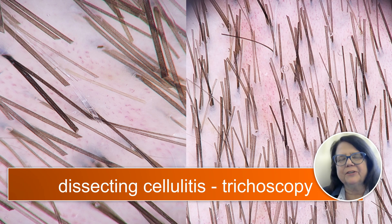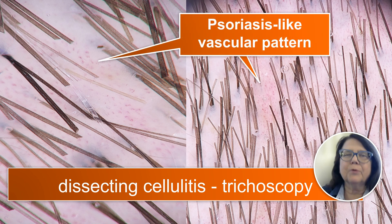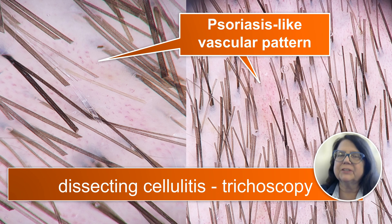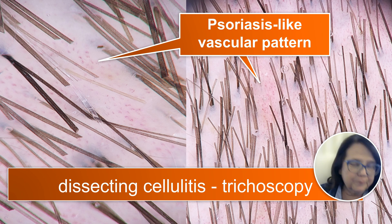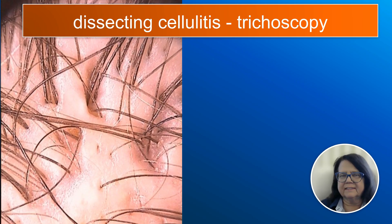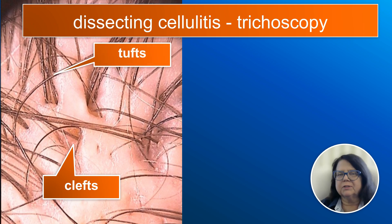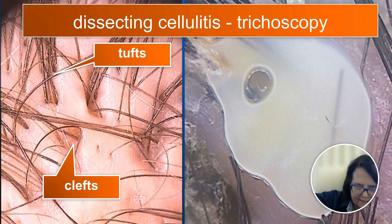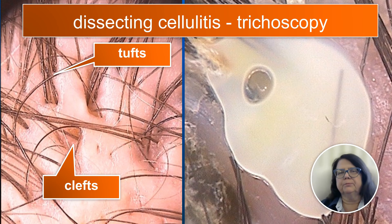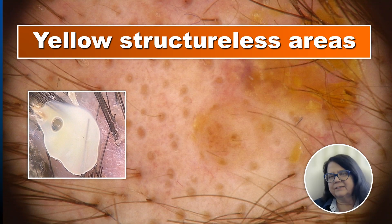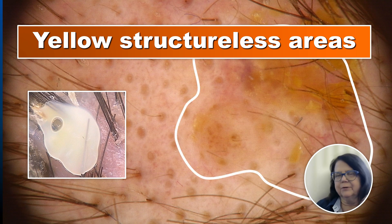Regarding the vascular pattern in trichoscopy of dissecting cellulitis, it may look a little bit like psoriasis, so it is important to distinguish the psoriasis-like vascular pattern in dissecting cellulitis from true psoriasis. In an advanced phase, in the formation of the abscess, we will see some clefts in trichoscopy — these are like skin pockets filled with hair tufts, so hair tuft formation may also occur in dissecting cellulitis. At this stage, if using a contact dermoscope pressed against the skin, there may be discharge of purulent material, which will then dry into quite big structureless yellow areas.